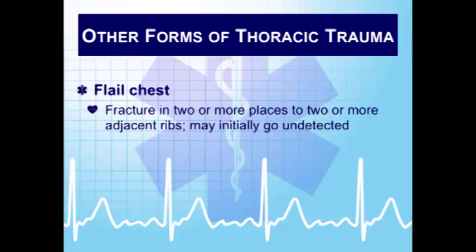Flail chest is defined as fracture in two or more places of two or more adjacent ribs. Many flail segments are fairly subtle and easy to miss, so we need thorough assessments. Some are quite obvious. It is often found alongside other serious chest injuries. There have been cases where the flail segment wasn't found for up to six hours. One advantage of level one and two trauma centers is they're used to dealing with lots of trauma patients and are more likely to pick this up. You can also have a central flail, where the sternum is separated from the ribs.